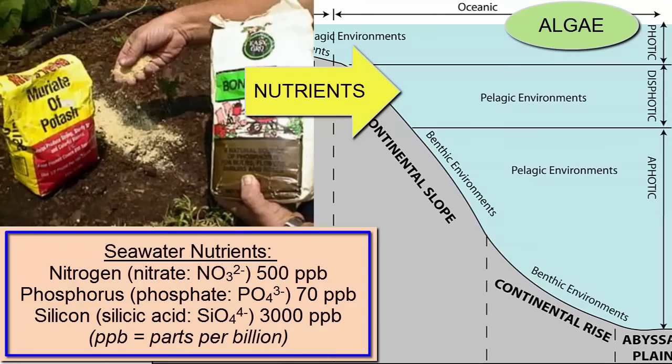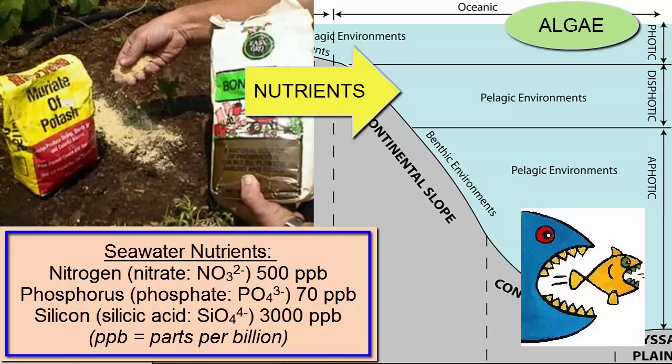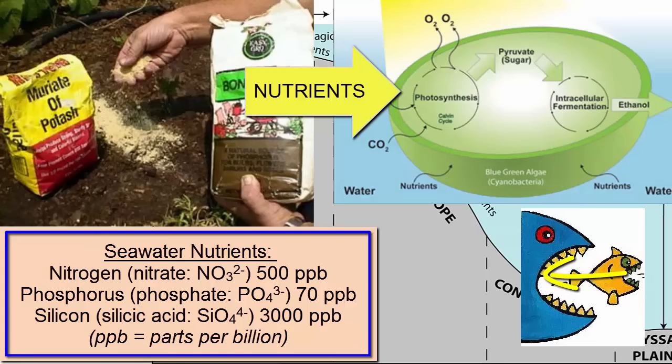About nutrients. We first mentioned these back in the chapter on sediments, when we discussed how nutrients like nitrate and phosphate ions need to be dissolved in abundance in the water in order for autotrophic plankton to survive. Heterotrophic organisms get their nutrients from their food. Autotrophic organisms make their own food, so they need another way of gathering in their body's building block material.